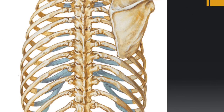Here we are seeing the thoracic cage from the posterior aspect, and we can identify the scapula. The superior angle of the scapula is present at the level of T2, the root of the spine of the scapula is at the level of T3, and the inferior angle of the scapula is present at the level of T7 — the seventh thoracic spine.